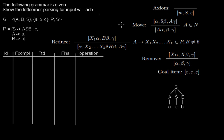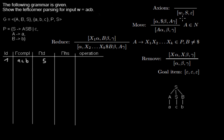If the chart is empty, the only rules we can apply are the ones that don't have any antecedent items. That rule is called axiom — we don't need any items to apply it. It says we put the input string in the left stack column; in this case it's ACB. We write the start symbol S into the middle column, and we write epsilon into the right column. The operation is of course named axiom.